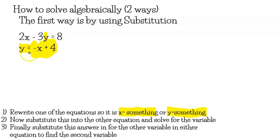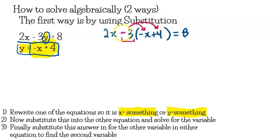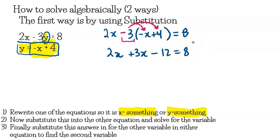Step one is already done — y is equal to something. We take that expression, negative x plus 4, and replace y in the other equation. So we get 2x minus 3 times (negative x + 4) equals 8. We expand: 2x plus 3x minus 12 equals 8. Combining like terms gives 5x minus 12 equals 8. Adding 12 to both sides: 5x equals 20.